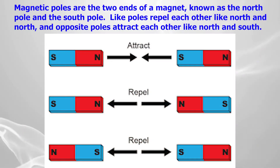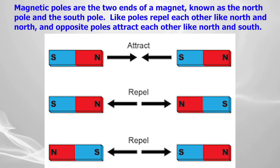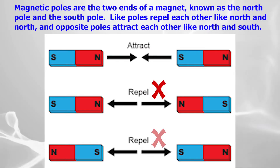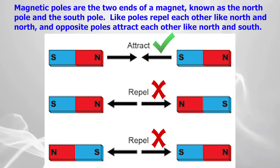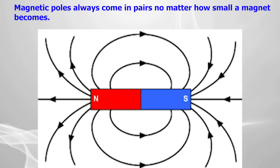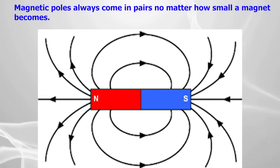Magnetic poles are the two ends of a magnet known as the north pole and the south pole. Like poles repel each other — such as north and north — and opposite poles attract each other — such as north and south. Magnetic poles always come in pairs no matter how small a magnet becomes.